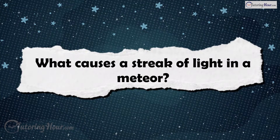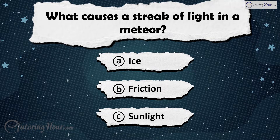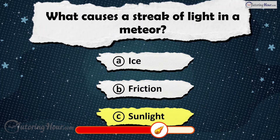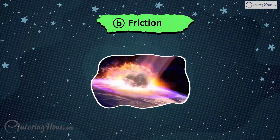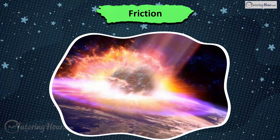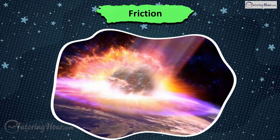What causes a streak of light in a meteor? Is it A) Ice, B) Friction, or C) Sunlight? The answer is Friction with Earth's atmosphere. The heat from friction causes meteors to glow brightly as they burn up.